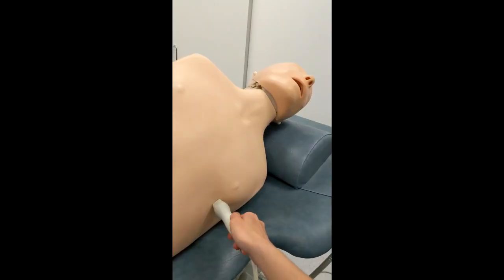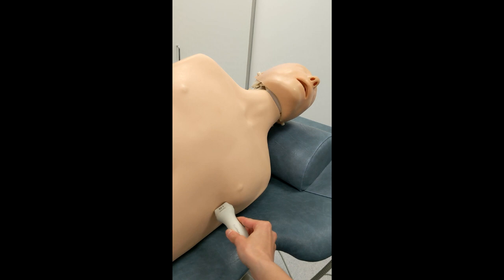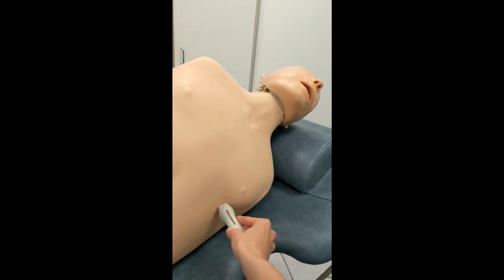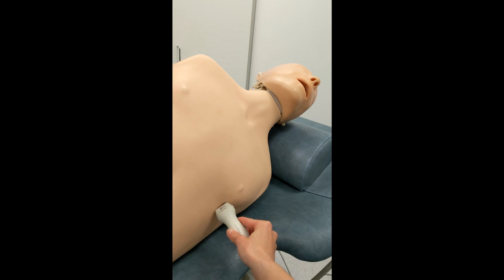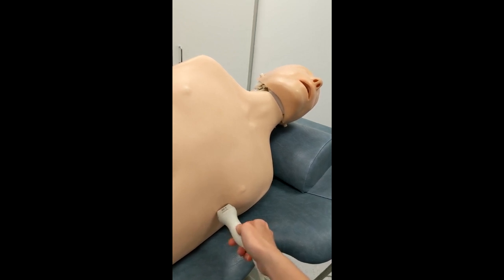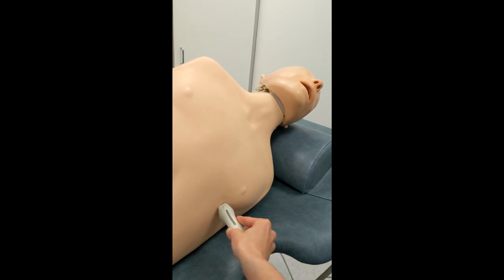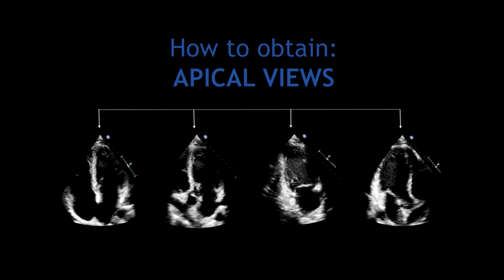In this video, I'm demonstrating how to obtain the different apical views. Just rotate the probe counterclockwise to obtain the different cuts. I'm starting here from the four-chamber view, rotating now to obtain the two-chamber view, and finally keep rotating to obtain the three-chamber view. And that's how you obtain the apical views. Normally, we always start by finding the apical four-chamber view, and from that point we rotate the probe counterclockwise to obtain the rest of the views.